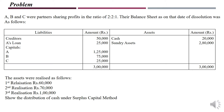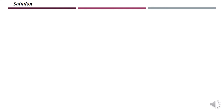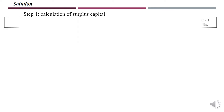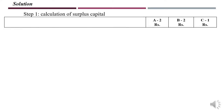The assets are realized in three stages: first stage 60,000 is realized, second stage 70,000 is realized, and third stage 1 lakh is realized. Now let us show the distribution of cash using the surplus cash method. We prepare the table with the three partners A, B, and C, whose profit sharing ratio is 2:2:1.